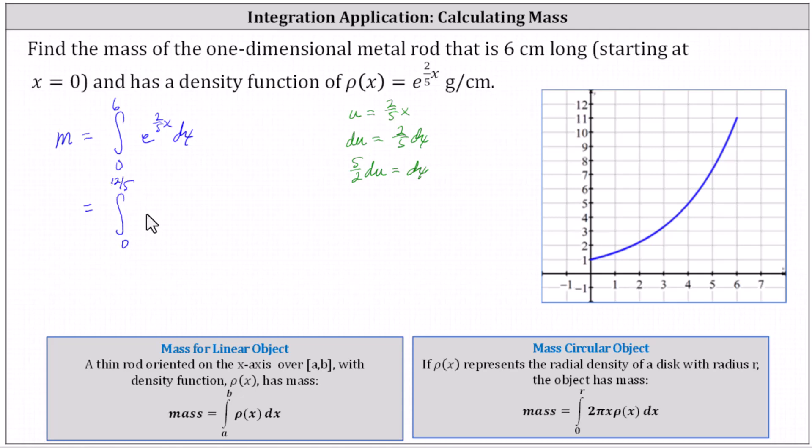And then we have e to the u. And then again dx equals five halves du. Let's factor out the five halves. And now we integrate. The anti-derivative of e to the u is just e to the u.